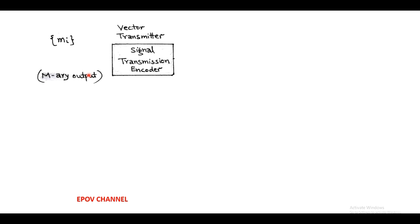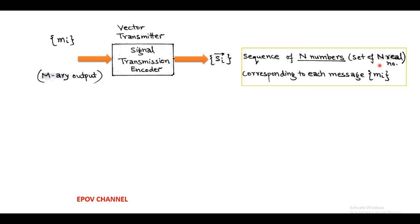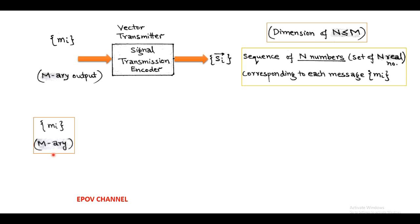The M-ary output m suffix i is passed through a vector transmitter, which is a type of signal transmission encoder. It encodes the M-ary output into a sequence of N real numbers, having a dimension capital N less than or equal to capital M. So at the input side we have M-ary output, and after converting into a sequence of N dimensions, we get a set of N real numbers. For example, we consider M-ary discrete messages m1, m2, up to m suffix capital M.